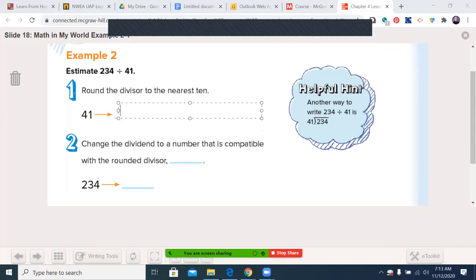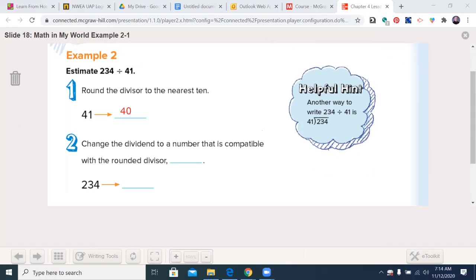And this is steps one and two at the top of your page. 40 to the nearest 10, that's, we have a four. The number next to it is a one, so it's going to stay a four, which stays two digits. Change the dividend to a number that's compatible with the rounded divisor. So I need something that four will go into equally. So let's look at our focus on 23. What is close to 23, but divisible by four?